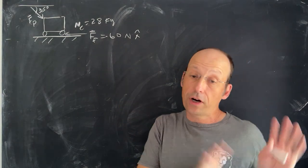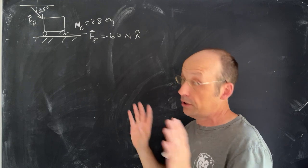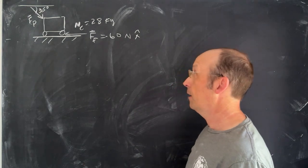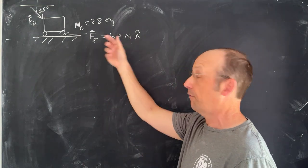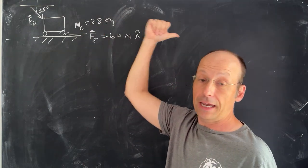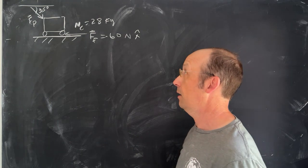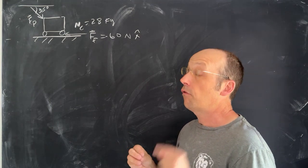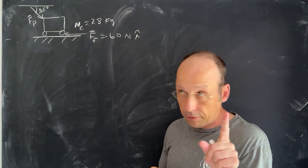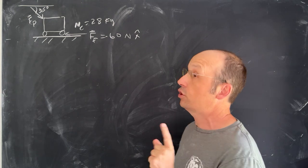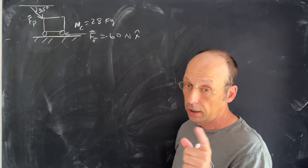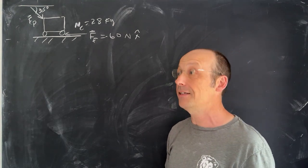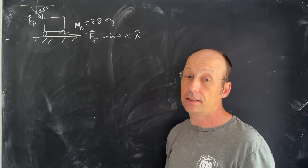We're going to do friction in the next chapter where we actually model friction, but right now we just know the magnitude of that. I've already put it as a vector and determined the x direction. The question is: draw a free body diagram, and what force does the nurse have to push with in order to move at a constant velocity?